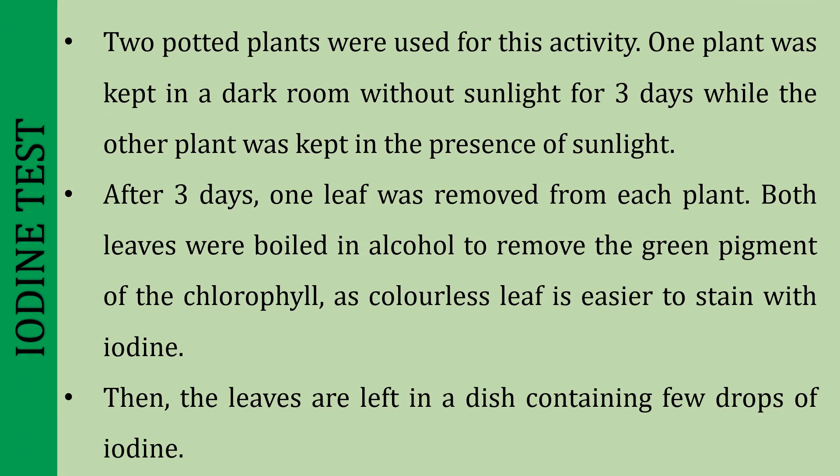Two potted plants were used for this activity. One plant was kept in a dark room without sunlight for three days, while the other plant was kept in the presence of sunlight. After three days, one leaf was removed from each plant. Both leaves were boiled in alcohol to remove the green pigment of the chlorophyll, as a colorless leaf is easier to stain with iodine.